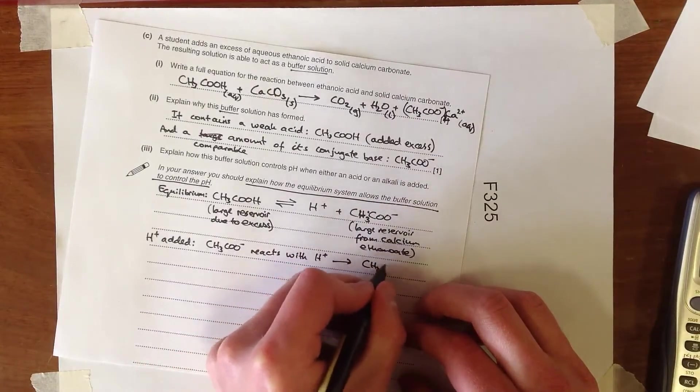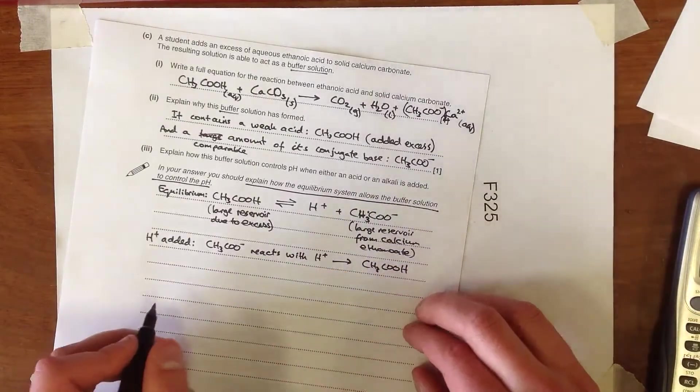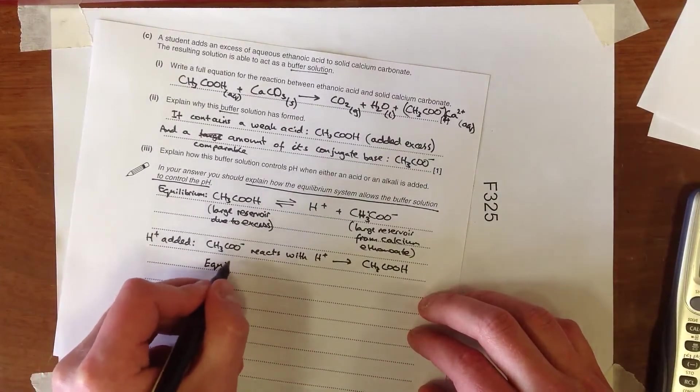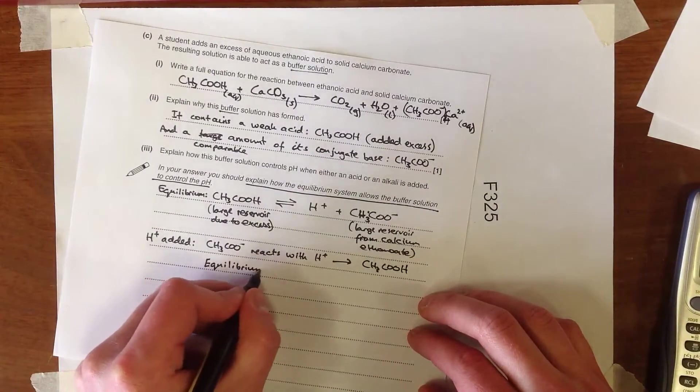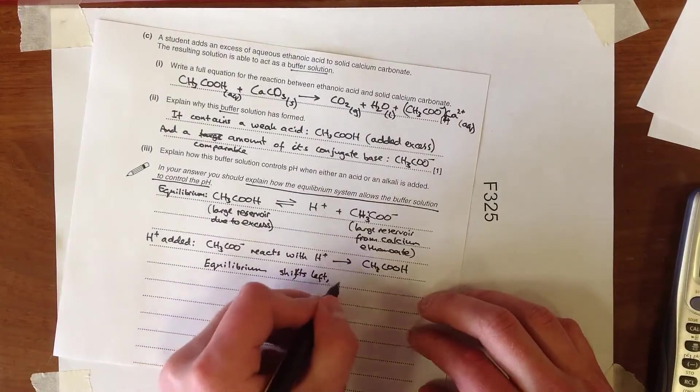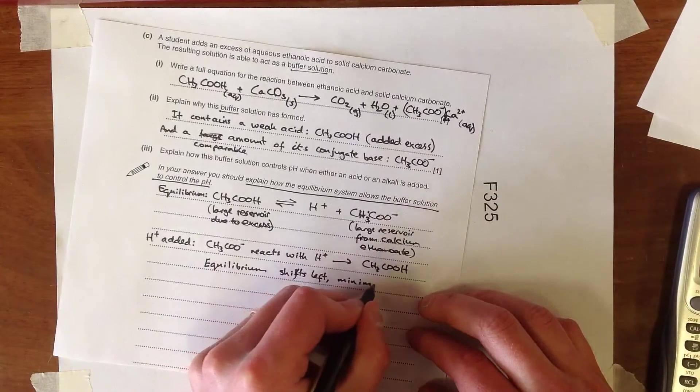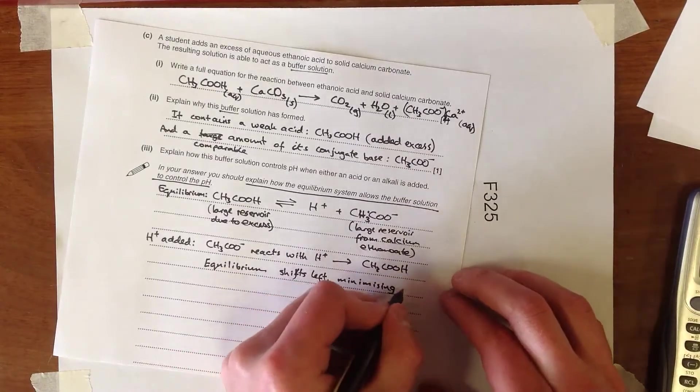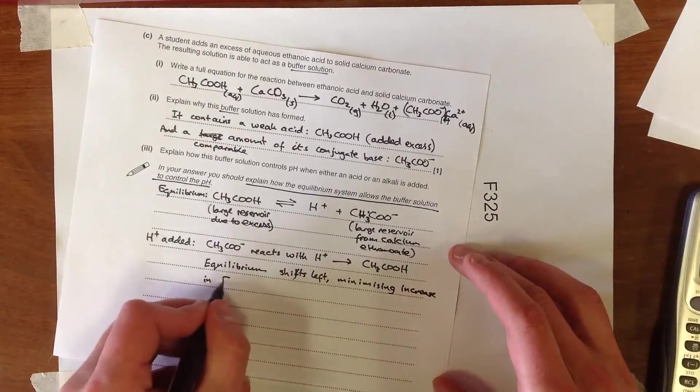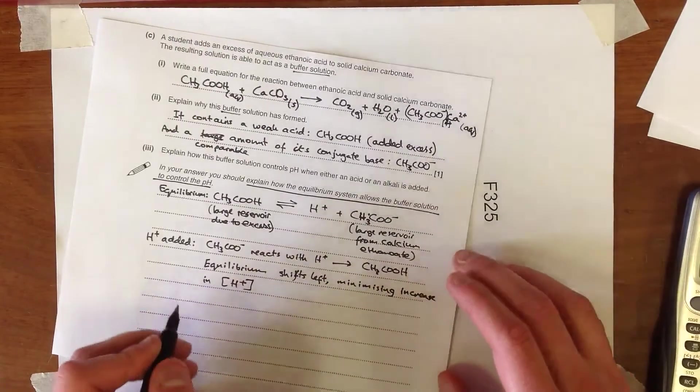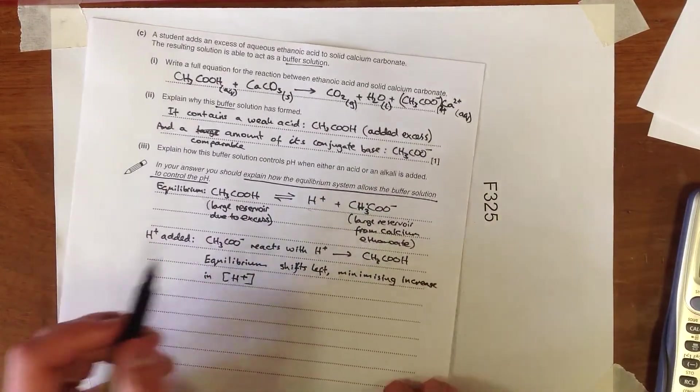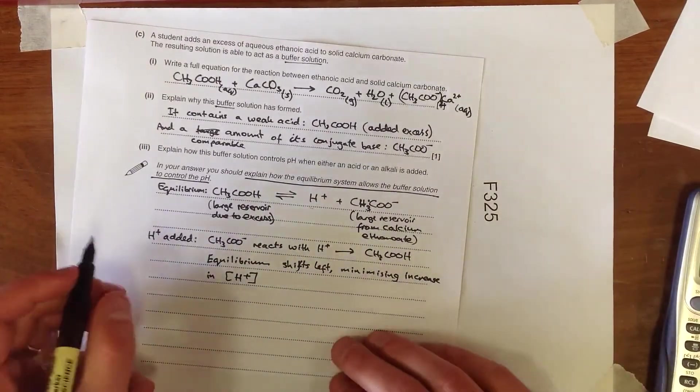forming CH3COOH. So in other words, the equilibrium shifts to the left, minimising increase in the concentration of H+. So as H+ is added, the equilibrium shifts to the left, removing H+, and hence keeping the pH approximately constant.